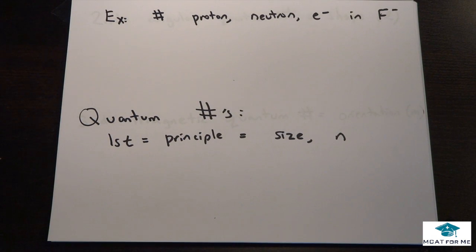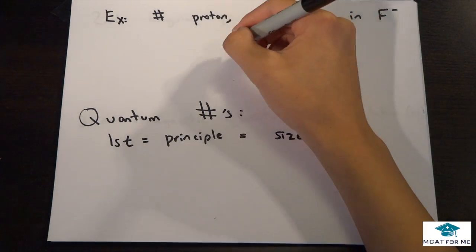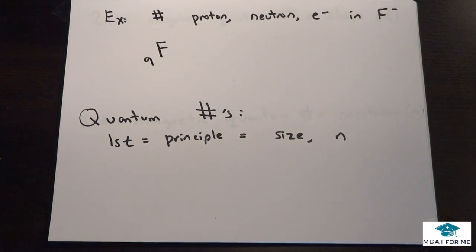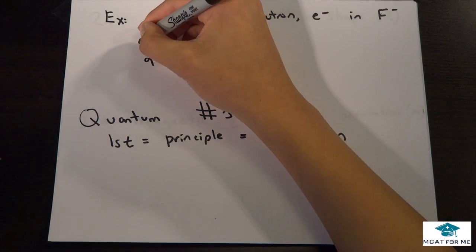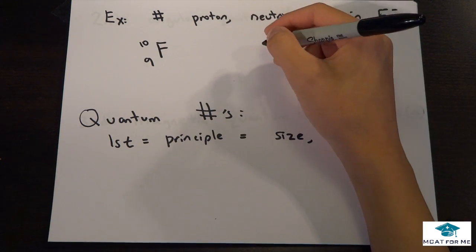Let's have this example. Find the number of protons and neutrons in fluorine minus. Fluorine minus means it has a negative one charge. Looking at the periodic table, we see fluorine has nine protons. Fluorine always has nine protons. We also know there are 10 neutrons, because there's a mass number of 19 from our periodic table.